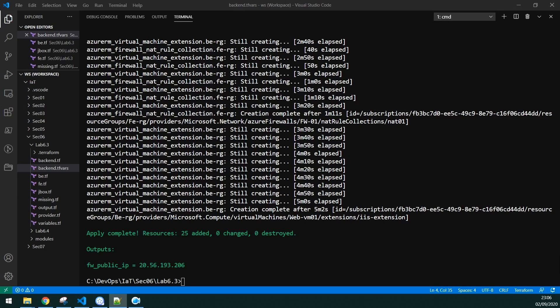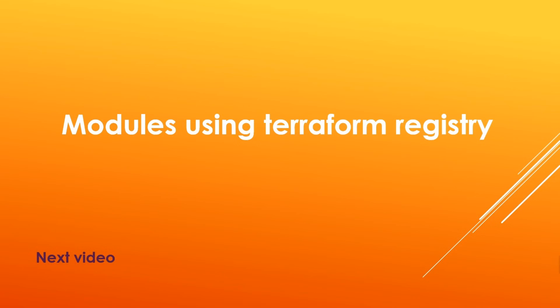In this lab, we redesigned our real-life infrastructure scenario lab by creating a root module from scratch and removing duplicate code by using the designed root module in the child module using local relative path. In the next video, we are going to set up another lab on modules using Terraform.